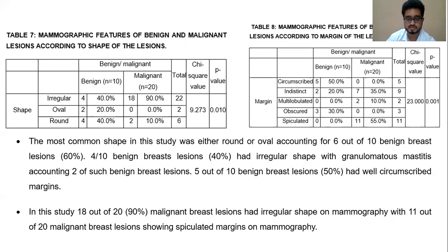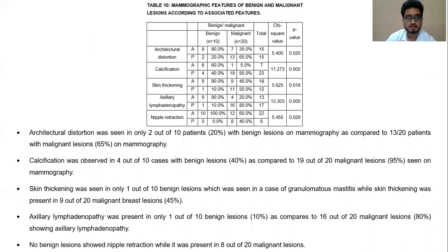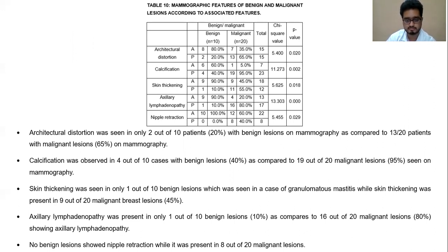The most common shape was either round or oval, accounting for 6 out of 10 benign breast lesions, while 4 out of 10 benign breast lesions had an irregular shape, with granulomatous mastitis accounting for 2 of such lesions. 18 out of 20 malignant breast lesions had an irregular shape on mammography, with 11 showing spiculations. Architectural distortion and calcification were uncommonly seen with benign lesions whereas they were far more common with malignant lesions. Skin thickening and axillary lymphadenopathy were also far more common with malignant lesions. None of the benign lesions showed nipple retraction whereas it was present in 8 out of 20 malignant lesions.